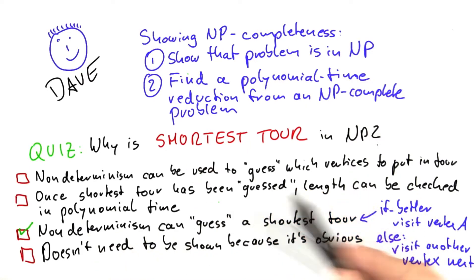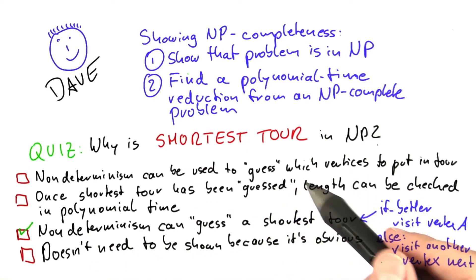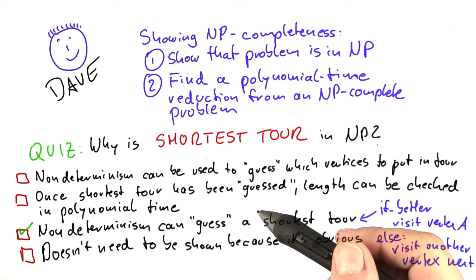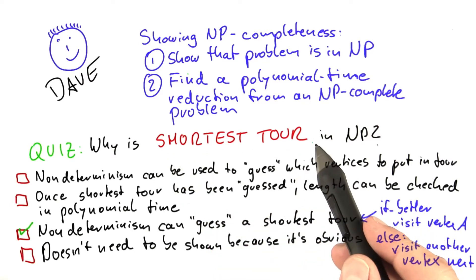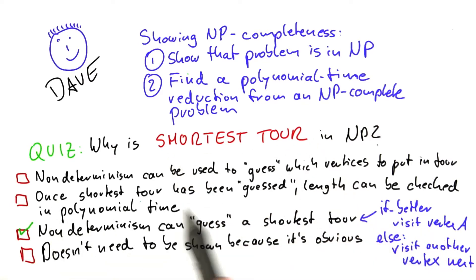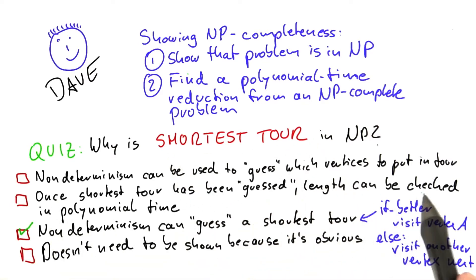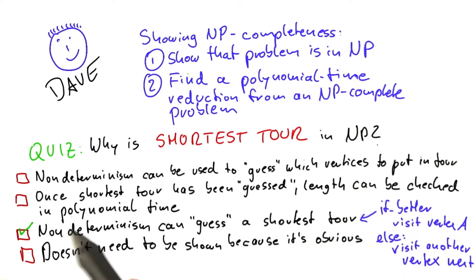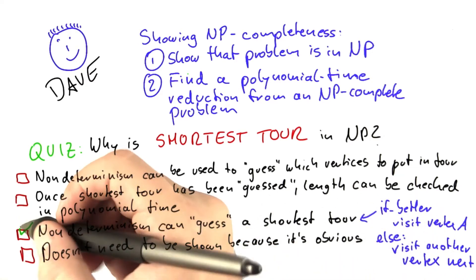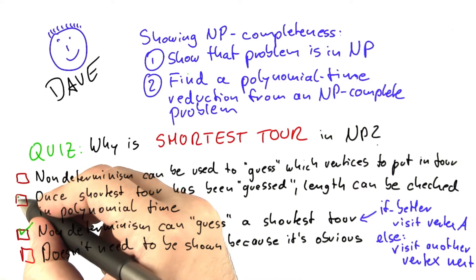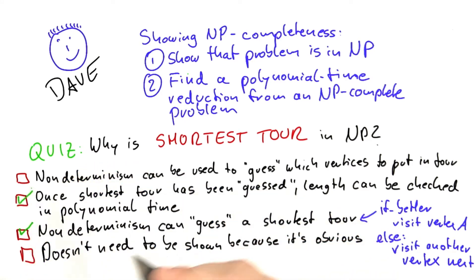As you'll remember, d was the maximum length that we allow for it, because we're treating shortest tour as a decision problem. Once the shortest tour has been guessed, it's easy to check if the length of that tour is smaller than d — by easy I mean it's possible in polynomial time — so this one here is also correct.